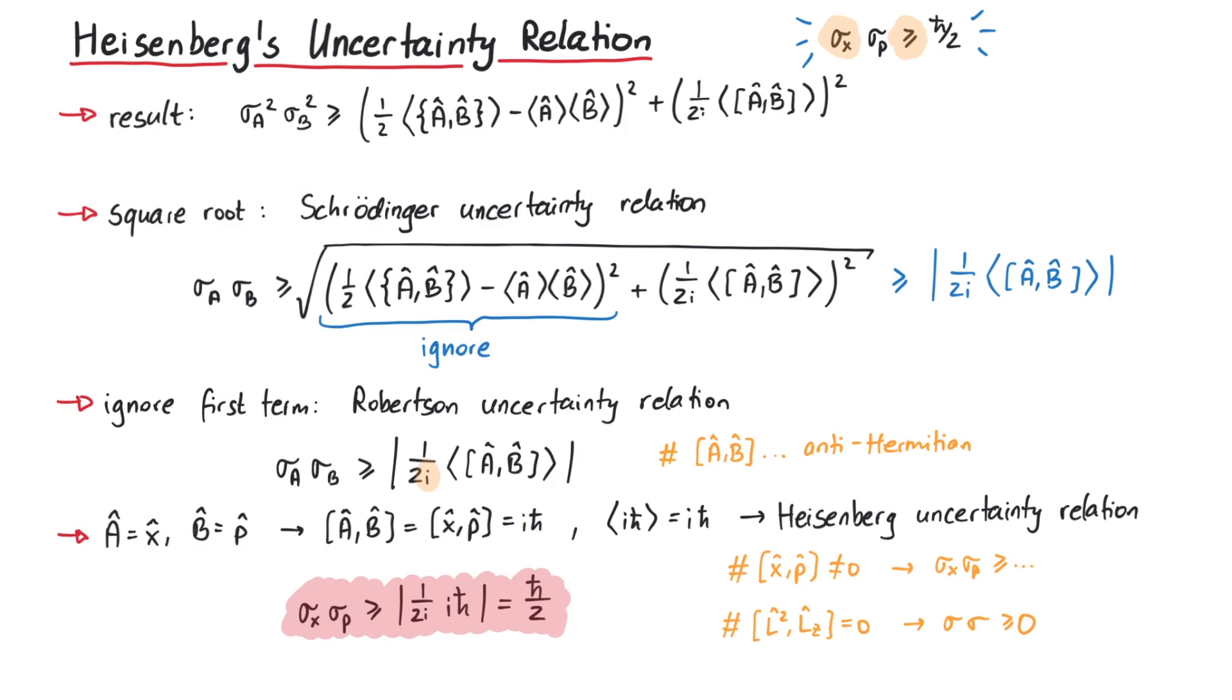So whether or not two operators fulfill Heisenberg's uncertainty relation depends on whether their commutator is zero or not. And that's pretty much it for this video. Thanks for watching.